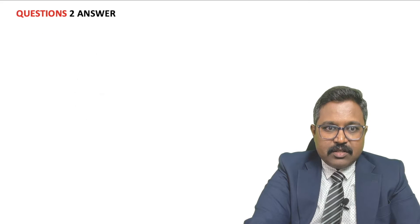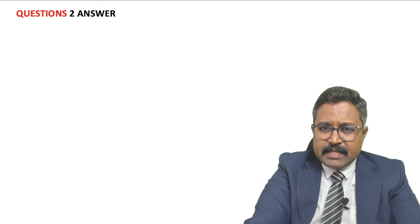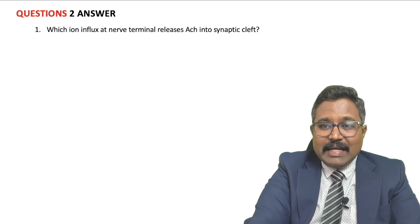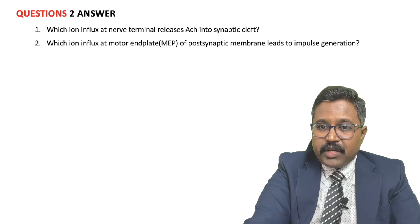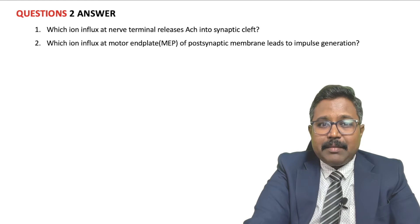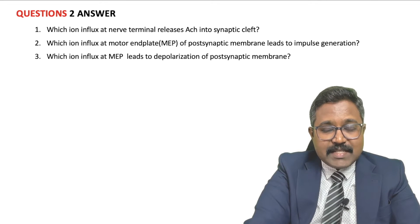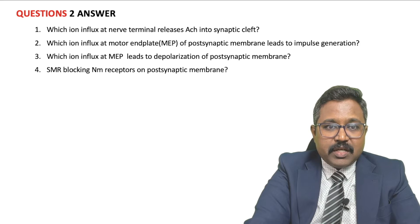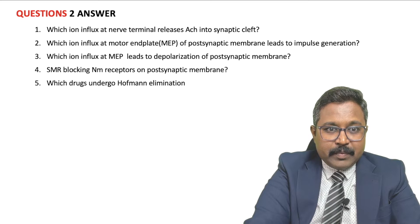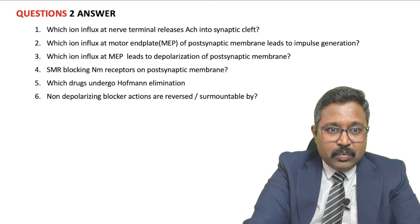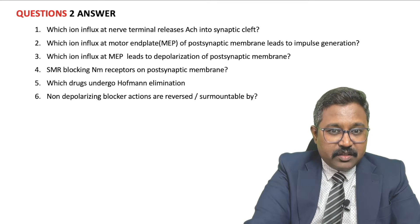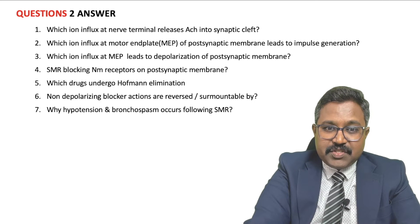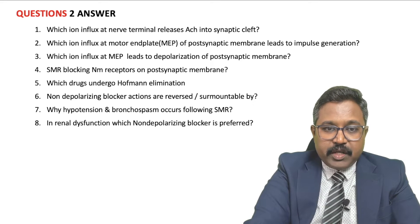Moving on to the skeletal muscle relaxants, let us understand the questions to be answered at the end of this session. You should be able to answer: which ion influx at the nerve terminal releases acetylcholine into the synaptic cleft? Which ion influx at the motor end plate of the post-synaptic membrane leads to impulse generation? And which SMR blocks the nicotinic NM receptors on the post-synaptic membrane? Also, which drug undergoes Hofmann elimination, and which non-depolarizing blocker is preferred in adrenal dysfunction?